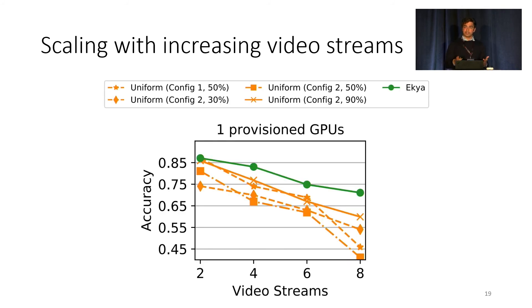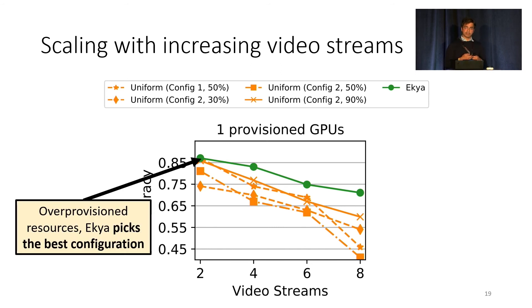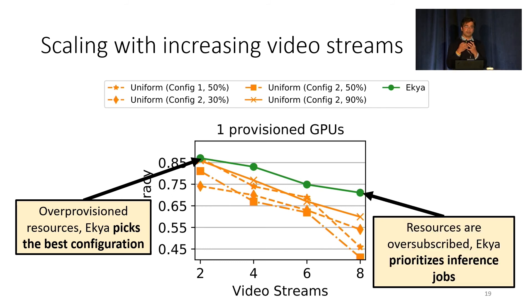In our end-to-end benchmarks, we compare the accuracy achieved by IKEA when serving a varied number of video streams with one GPU. This plot shows the mean accuracy across all video streams for the Cityscapes dataset. Each baseline uses a fixed configuration with a fixed percent of resources allocated to inference versus training. When the number of video streams is small, there are enough resources to run retraining without significantly impacting inference, and all schedulers achieve similar accuracy. However, as resources become more oversubscribed, IKEA identifies the situation, prioritizes inference jobs over retraining to maximize inference accuracy, and retrains only when feasible.